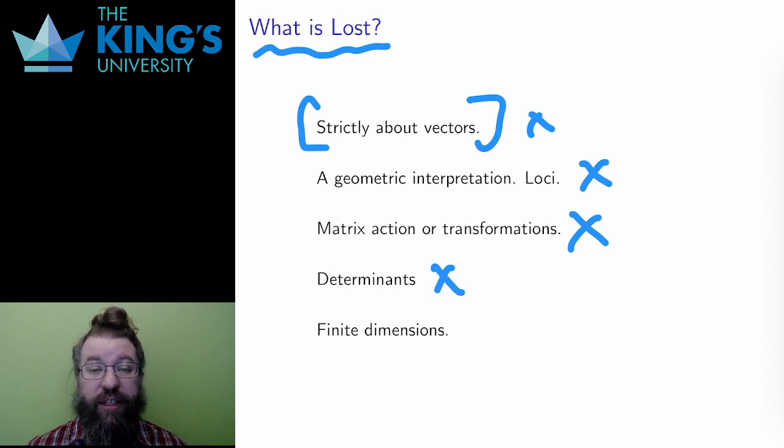Finally, and most interestingly, the finite dimensional nature of R^n may also be lost. These abstract vector spaces may be infinite dimensional. In fact, all of the examples I'm going to get to are infinite dimensional. This seems very strange, so let me get into the examples to try to explain.